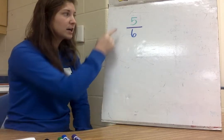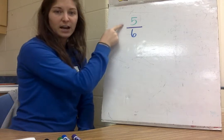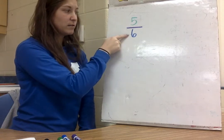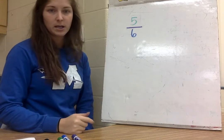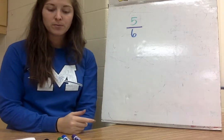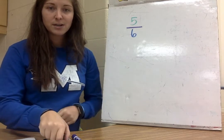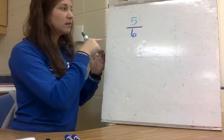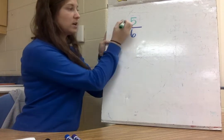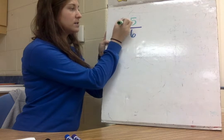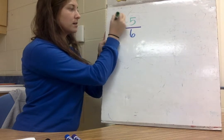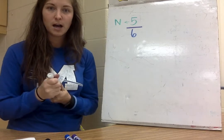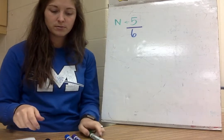I have the fraction 5/6 right here. I have the 5 in green, the 6 in blue, and the fraction bar in purple. I want us to identify the different parts of this fraction. The 5 is known as our numerator — I'm going to label it with an N. The numerator is the top number of your division problem.